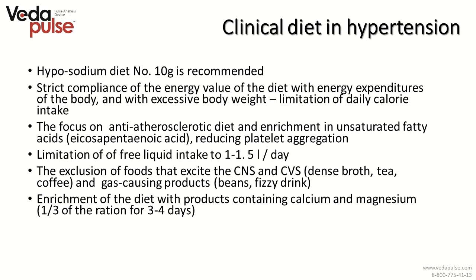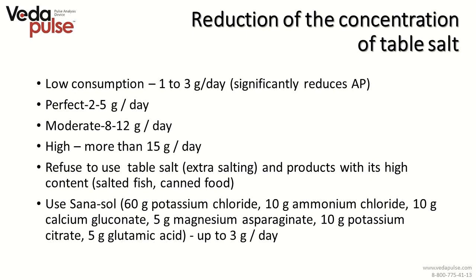For clinical diet in hypertension, the hyposodium diet number 10 is recommended for this constitution type. It is a low-calorie diet that controls cholesterol and prevents formation of blood clots. It also limits liquids for normal blood volume, limits products that agitate the sympathetic nervous system, and provides sufficient potassium and magnesium. Reduction of table salt concentration is important, and lowering salt consumption significantly reduces arterial pressure. One should refuse excessive table salt and products with high salt content such as salted fish and canned food.